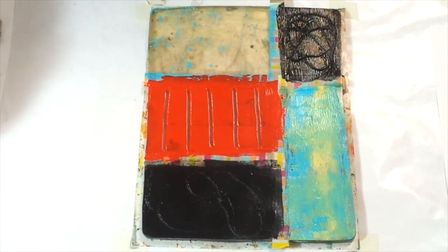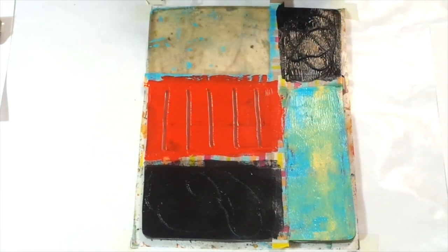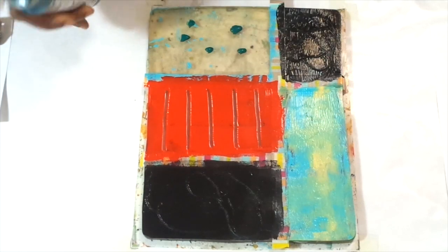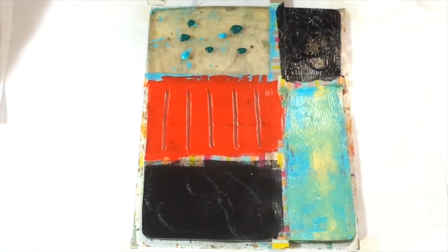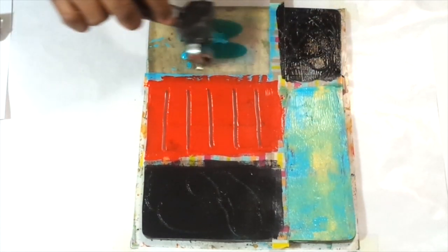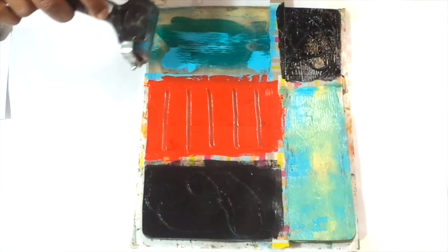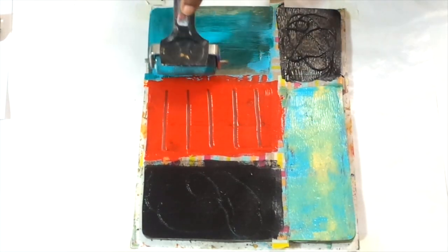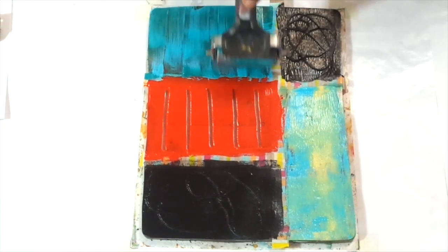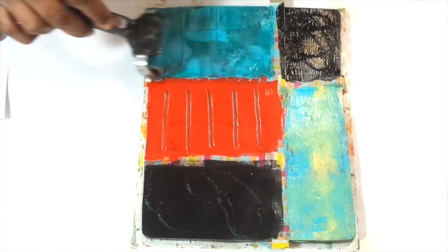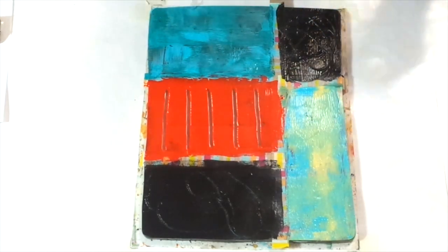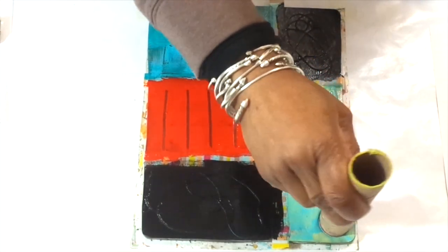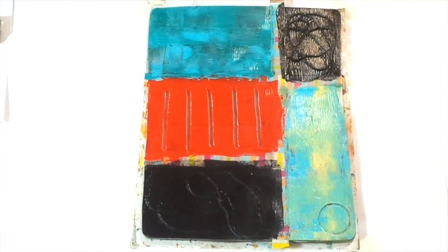And I'm going to use a little viridian green and a little bit of teal mixed in with it. I'm going to go in with my tube and make some circles.